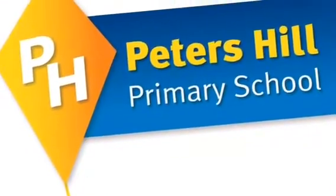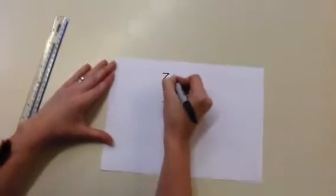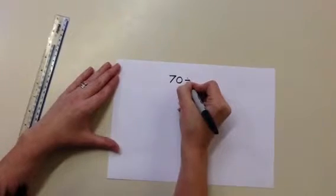Division using chunking. This method of division uses subtraction in columns to help us understand how many groups we are taking away.